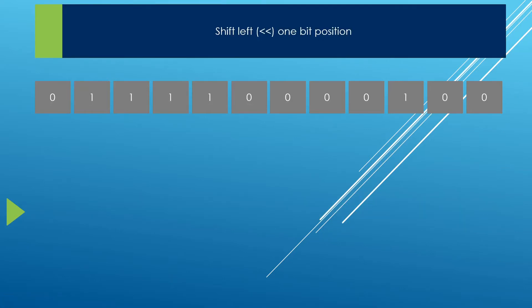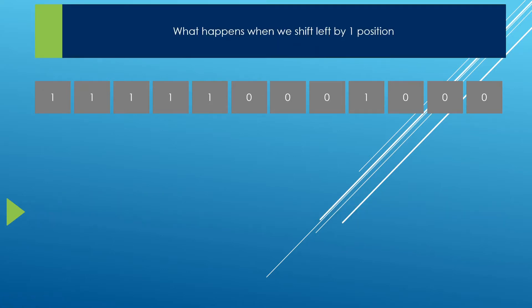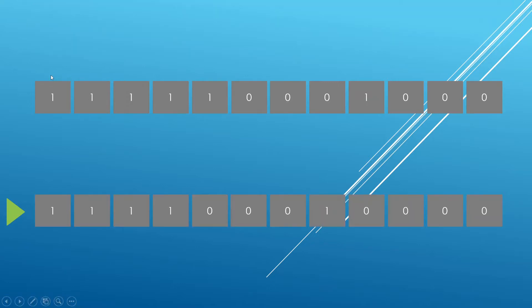Let's shift left one bit position again. This bit should hit the end, and we pad in a new zero. Once we shift left by one more position, this one here is going to be lost — thrown off just like we have been throwing off zeros. After doing that, this one was thrown off. We had five ones; now we are left with four ones, and we have padded in a new zero.